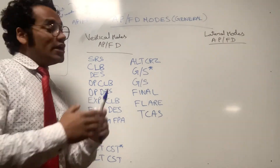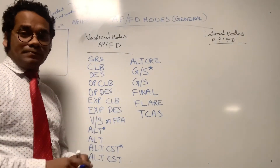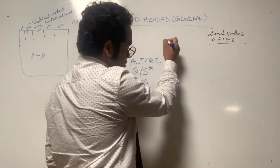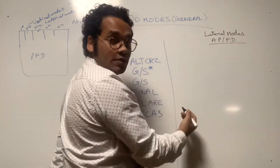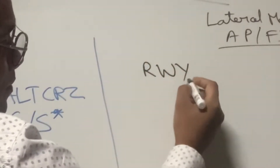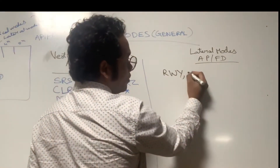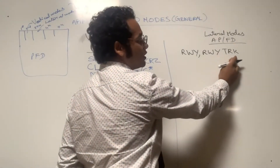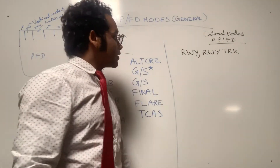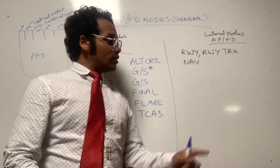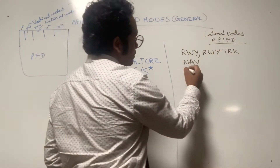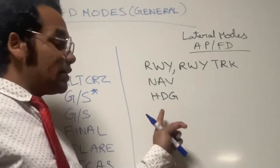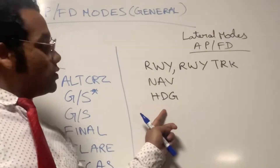Next let's discuss what lateral mode FMAs of autopilot and flight director can appear in the third column of the PFD. The FMAs which can appear in lateral modes are: RWY, meaning runway mode, and RWY TRK, meaning runway track mode. Next, NAV, which means navigation mode.